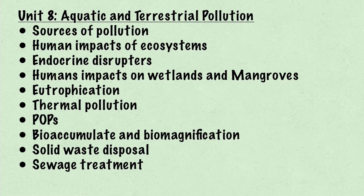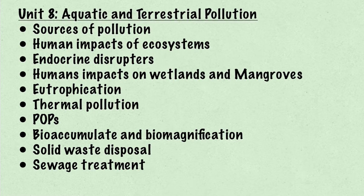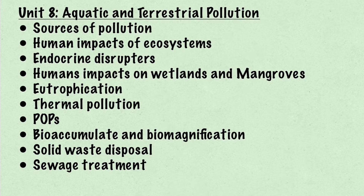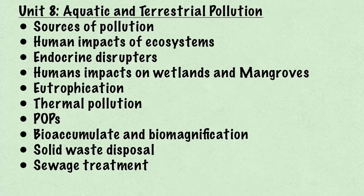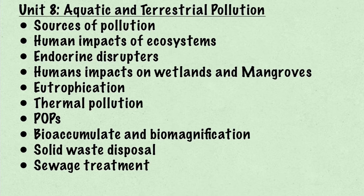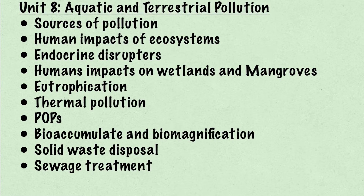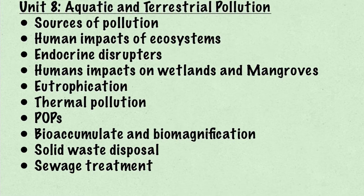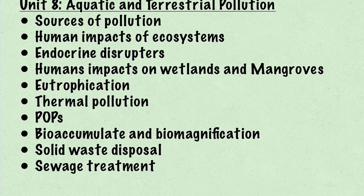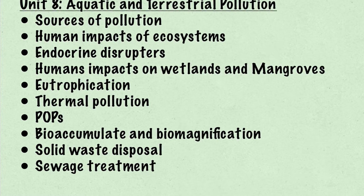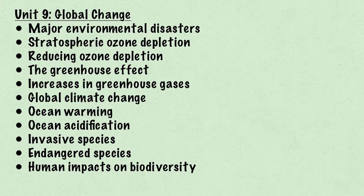Unit 8 is about aquatic and terrestrial pollution, including sources of pollution, human impacts on ecosystems, endocrine disruptors, human impacts on wetlands and mangroves, eutrophication, thermal pollution, POPs, bioaccumulation and biomagnification, solid waste disposal, and finally sewage treatment.